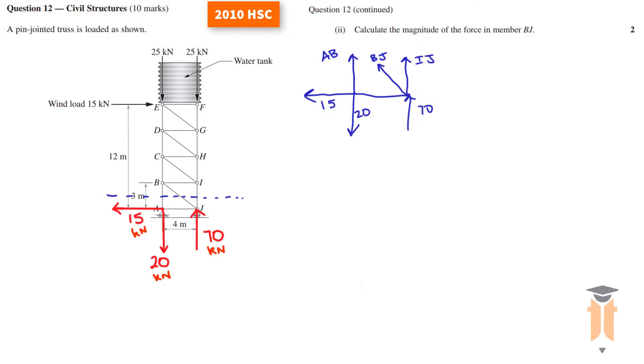Now if I look at sum of forces in the horizontal direction, AB has no horizontal, IJ has no horizontal, but BJ has a horizontal component and we've got that 15 kilonewton force going to the left. So in this case we have only one unknown. Before I break up BJ into its horizontal component, I need to find this angle.